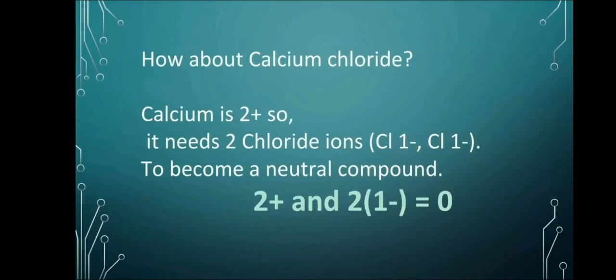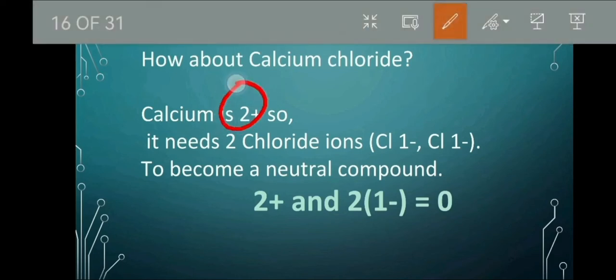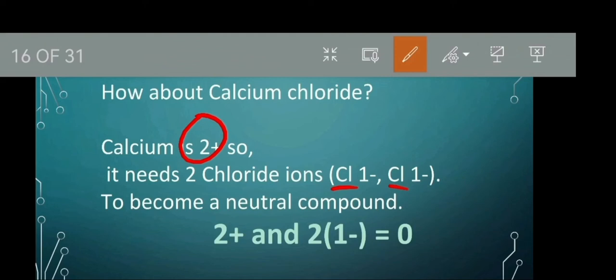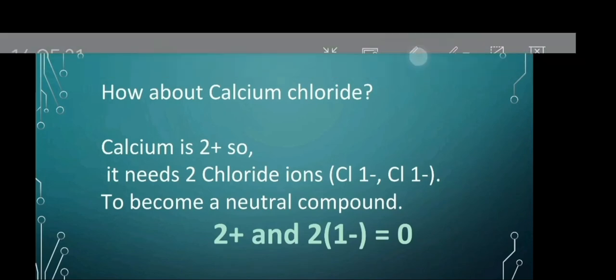How about calcium chloride? Calcium, if you're going to look at your table of elements, it has 2+. So it needs 2 chloride ions. Chloride, if you're going to look at your table, has 1 negative. So 2+, when you add it with 2 times negative 1, that's equal to 0. I hope we all get this.